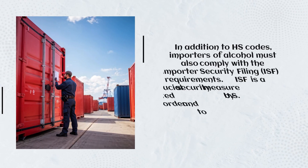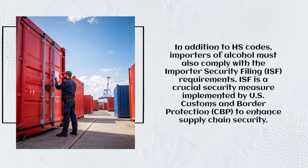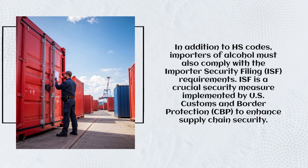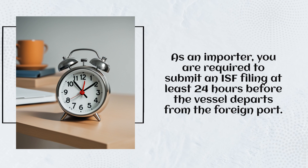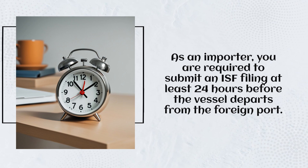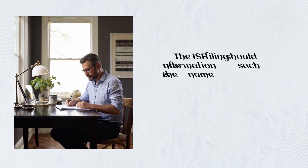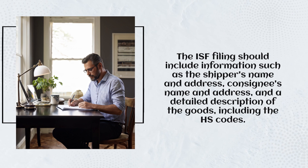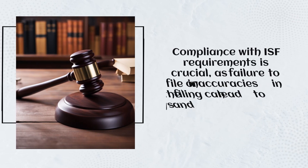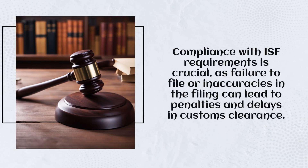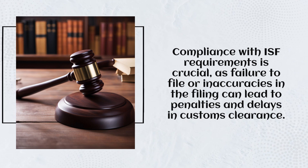In addition to HS Codes, importers of alcohol must also comply with the Importer Security Filing requirements. ISF is a crucial security measure implemented by U.S. Customs and Border Protection, CBP, to enhance supply chain security. As an importer, you are required to submit an ISF filing at least 24 hours before the vessel departs from the foreign port. The ISF filing should include information such as the shipper's name and address, consignee's name and address, and a detailed description of the goods, including the HS Codes. Compliance with ISF requirements is crucial, as failure to file or inaccuracies in the filing can lead to penalties and delays in customs clearance.